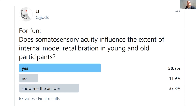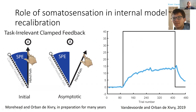In the first study, it's about an error-clamp feedback task, where people don't see the hand and have to bring the hand from the starting position to the target — the black circle. They are told that the cursor they see on the screen is completely uncoupled from their hand movement. The cursor will always go to the left, while the hand has to go to the target, even though they don't see the hand.